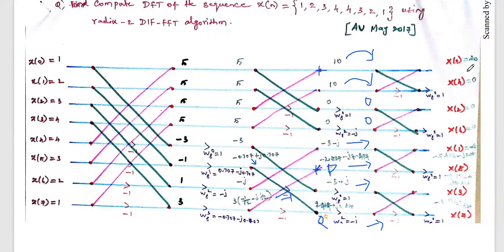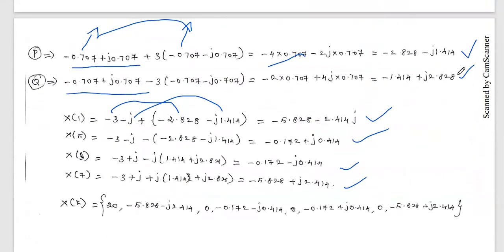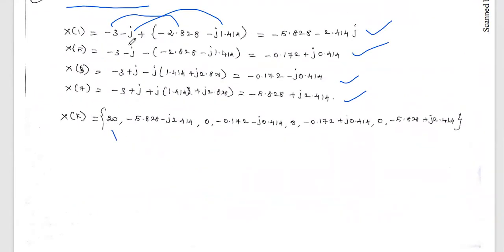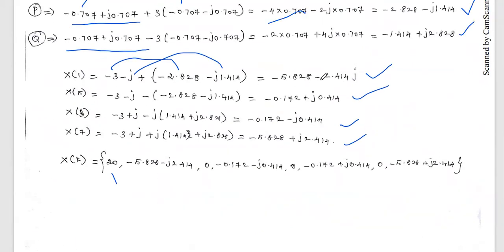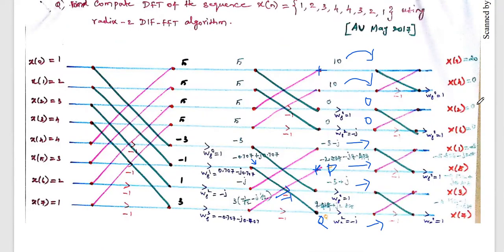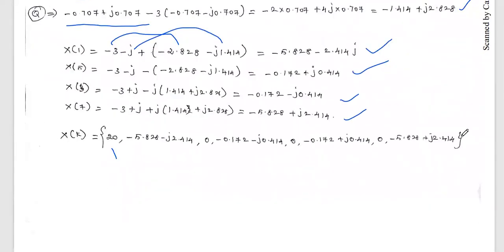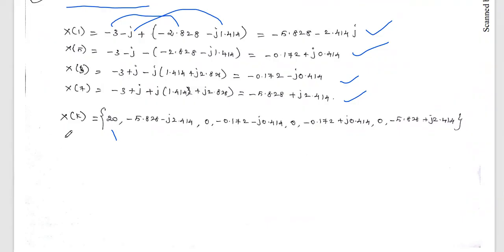The DIF algorithm output is in bit-reversed order, so we must rearrange. Writing X(k) in order: X(0)=20, X(1)=−0.828−j2.414, X(2)=0, X(3)=..., X(4)=0, X(5)=..., X(6)=0, X(7)=... This matches the same answer obtained previously using the DIT FFT algorithm for the same sequence.